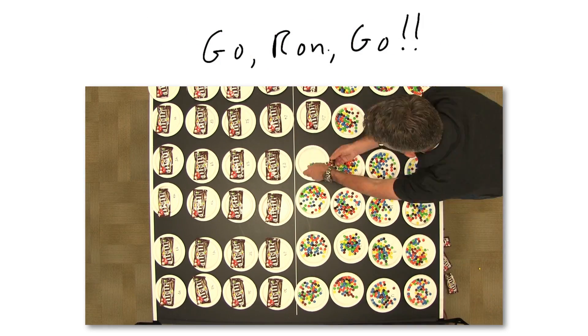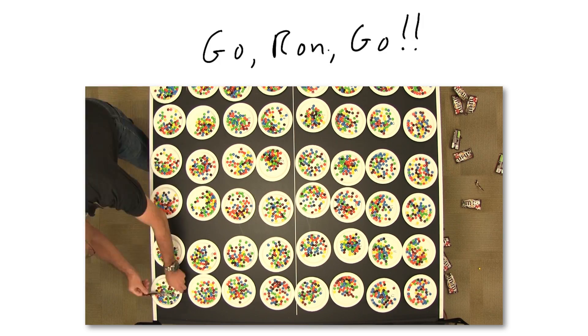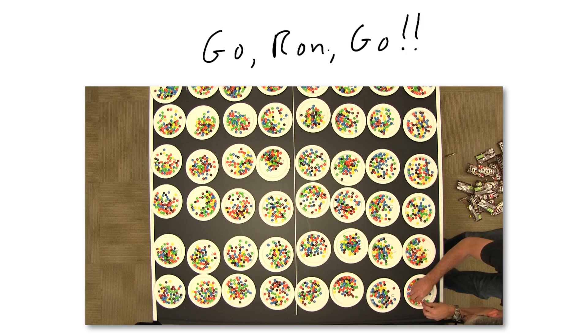Once we have all of the M&M's dumped out, we're going to separate them by color. We are interested in the blue M&M's. Of course, you could pick any color if you wanted. You could use orange or green or yellow, but we've chosen blue.